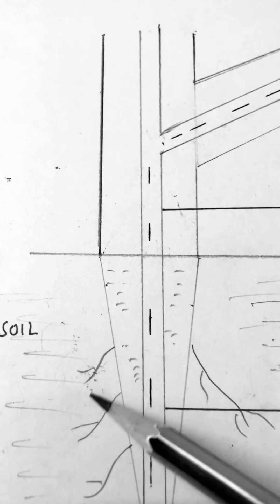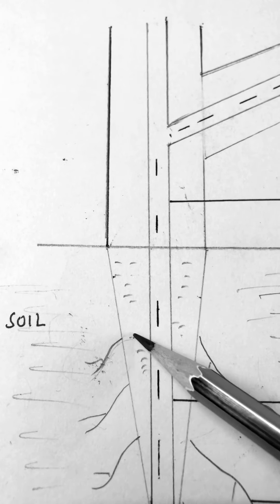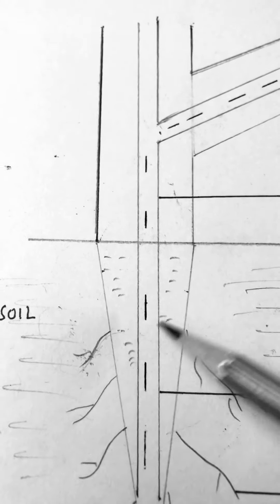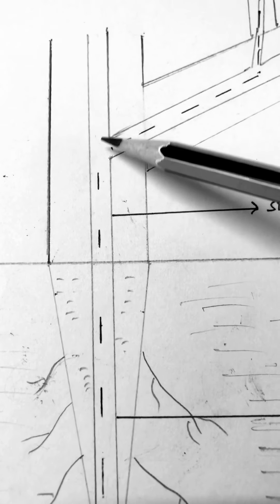Now, from the root hair, the water is able to reach the roots because all these cells are living cells and once it enters into the xylem, see this inner pipe, this is the xylem.